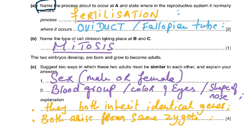The explanation is that they both inherit identical genes and both arise from the same zygote. That one zygote divides by mitosis into two, and those two cells form two human beings. Normally this doesn't happen — I don't think any of you is an identical twin. They both inherit identical genes and both arise from the same zygote.